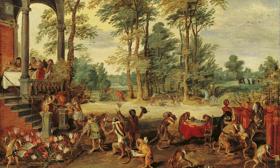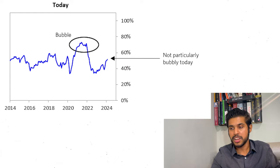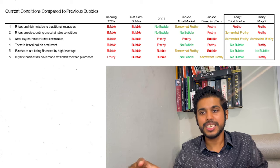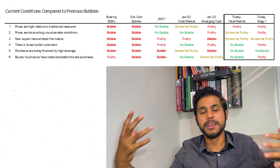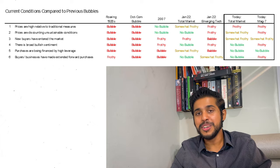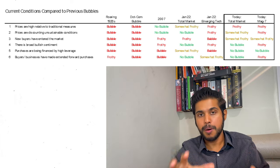I somewhat agree with his definition of a bubble, especially because it takes into consideration retail investors. It's not just about prices — it's also the actions and psychology of retail investors. Based on these six items, according to Ray Dalio, we are not in a market bubble, but the Magnificent Seven stocks are somewhat frothy. Frothy means a little bubbly but not really in a bubble — things are getting overvalued, but we cannot really call it a bubble.